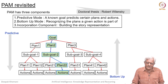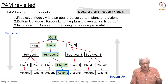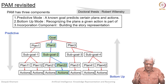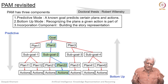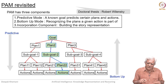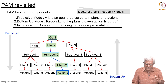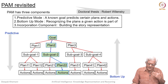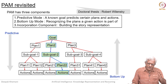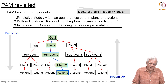PAM has a knowledge base in which for every type of goal, it has a set of plans that can be used to achieve that goal. Those plans may have sub-goals and those sub-goals may have sub-plans. Eventually it will go down to the level of actions. Basically when it reads the story, it is trying to figure out where that sentence fits into this whole goal-plan hierarchy.